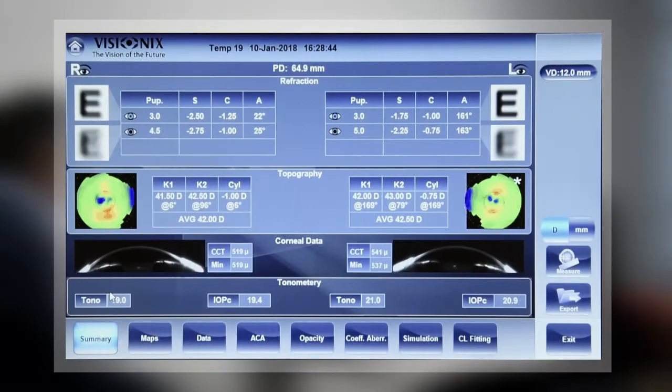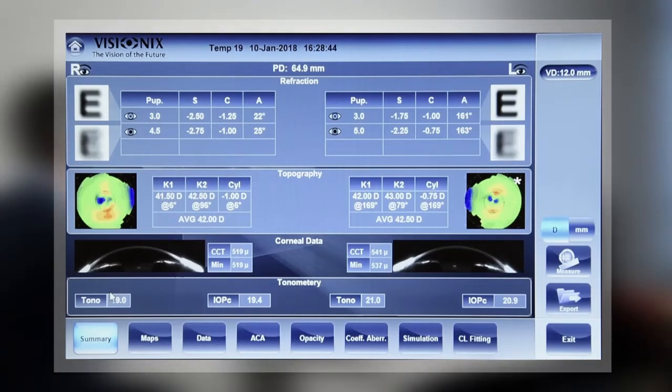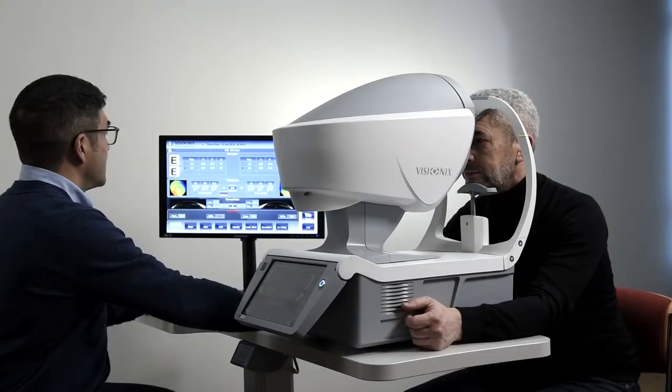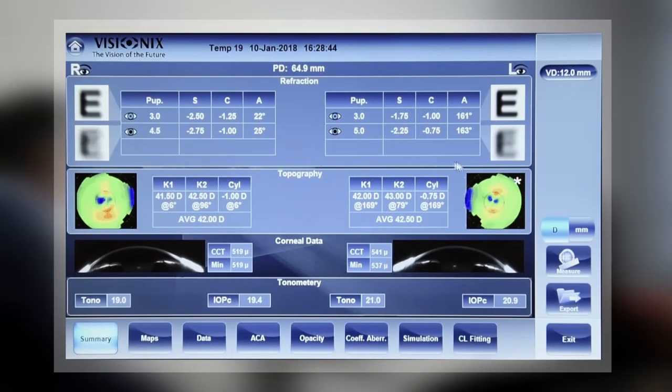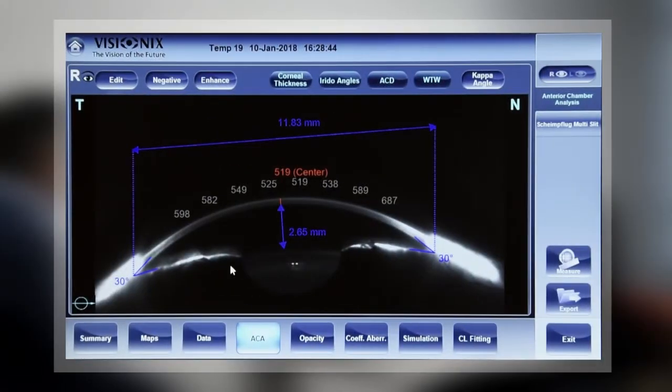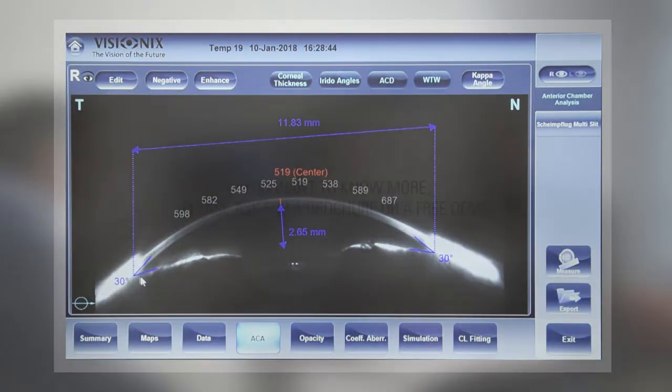Next, you will directly access a screen summarizing the main information gathered during the examination. This first report provides a summary of your patient's overall visual health. You can also view the image of the anterior chamber as well as additional data.